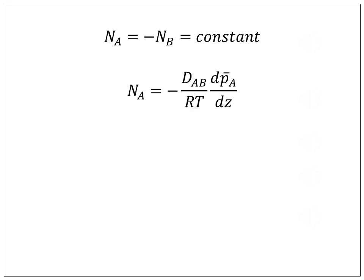Hence, the above equation reduces to Na equals minus DAB by RT dpA bar by dZ.